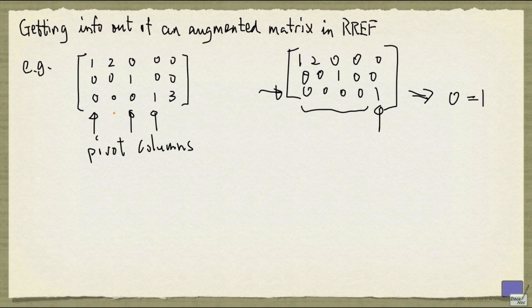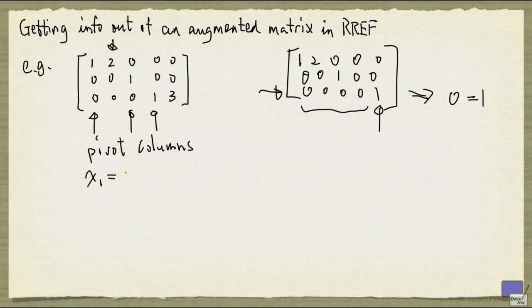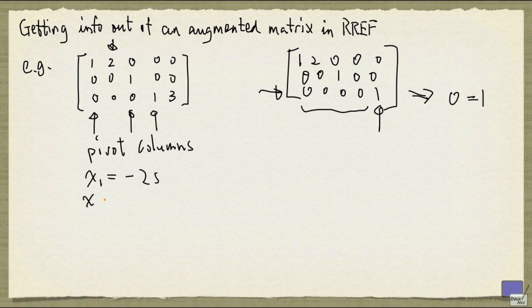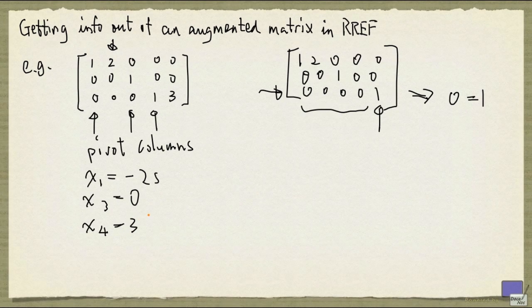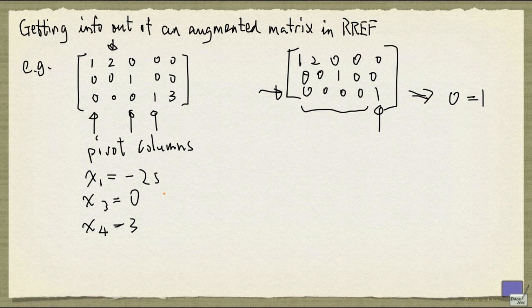Now, what about this? Well, any time you have a free variable, you will have infinitely many solutions. The reason is because, for example, if I look at this column here, 2, 0, 0, it's not a pivot column. Now, I can set the variable corresponding to this column to anything I want. In particular, we can set it to S, then we can obtain the solutions: x1 equal to minus 2S, x3 equal to 0 coming from the third column, and x4 equal to 3, and x2, as I said, is going to be S. So for different values of S, I'll get different solutions to the system that correspond to this augmented matrix.